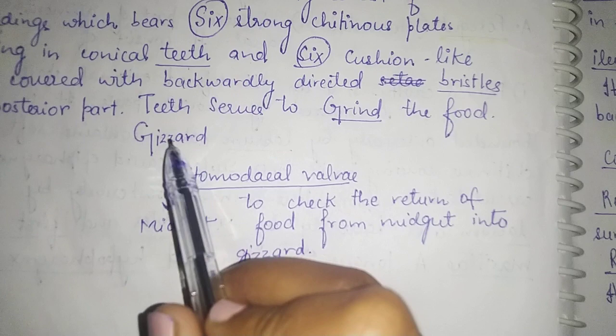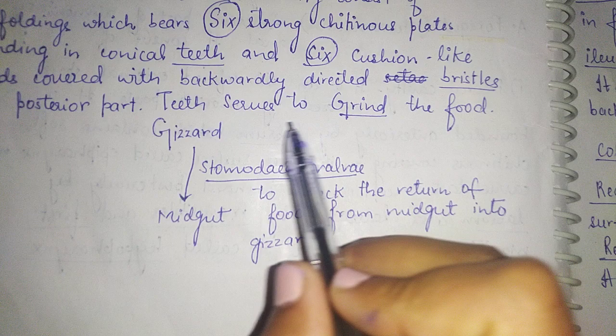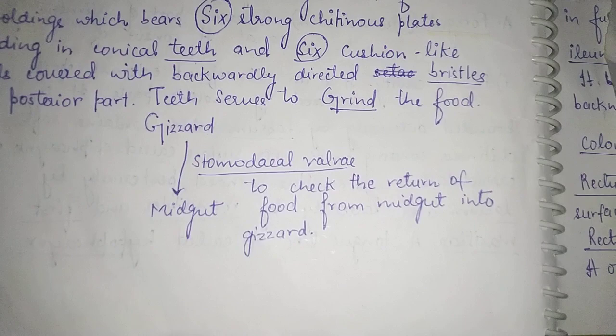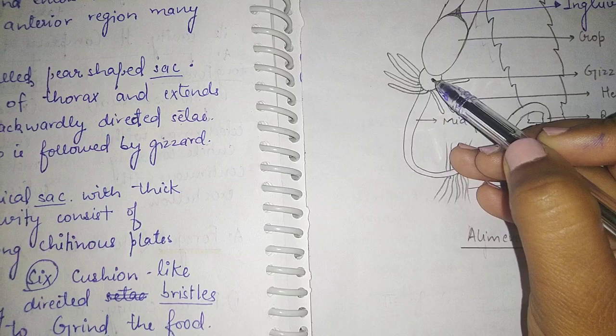At the posterior end of the gizzard, between the posterior end of the gizzard and the anterior end of the midgut, is the stomodeal valve. This valve functions to check the return of food from the midgut back into the gizzard.